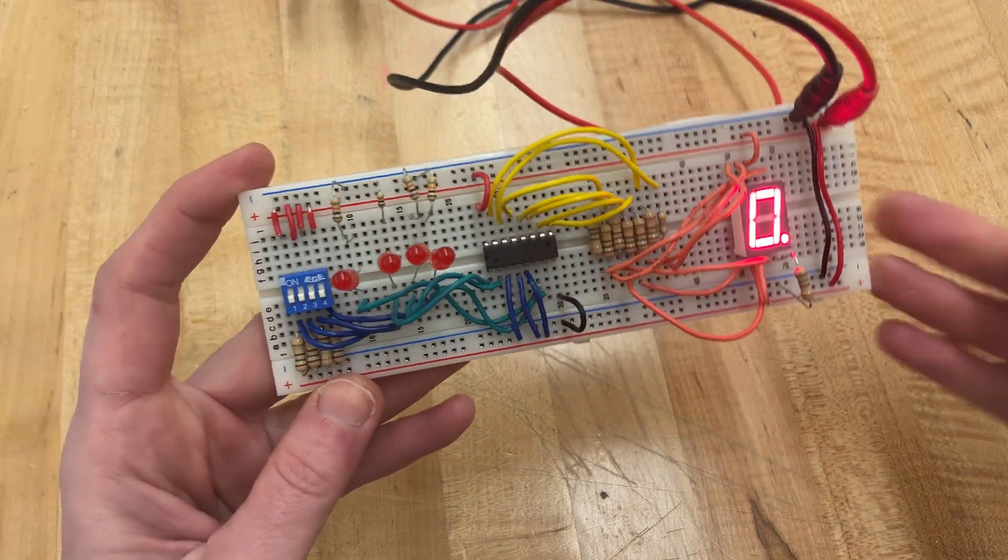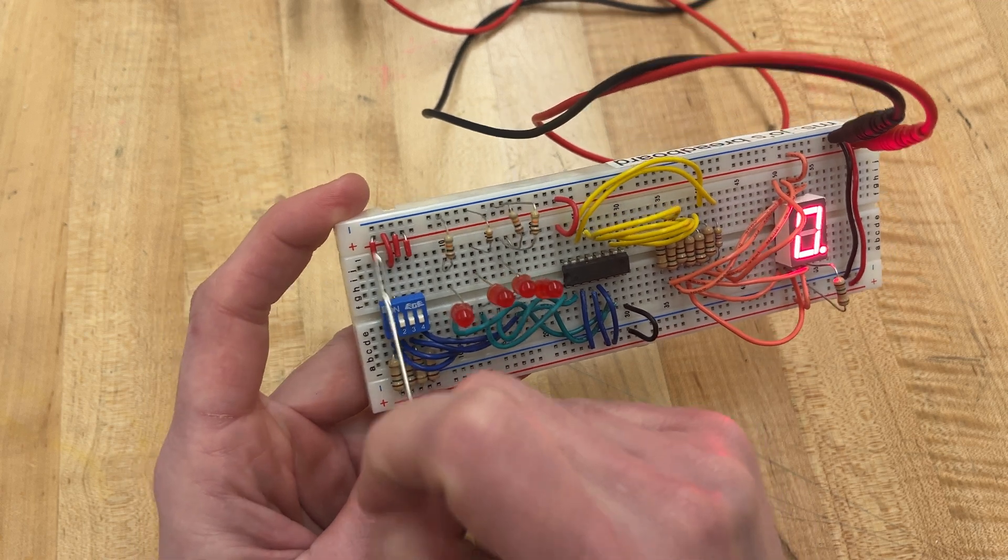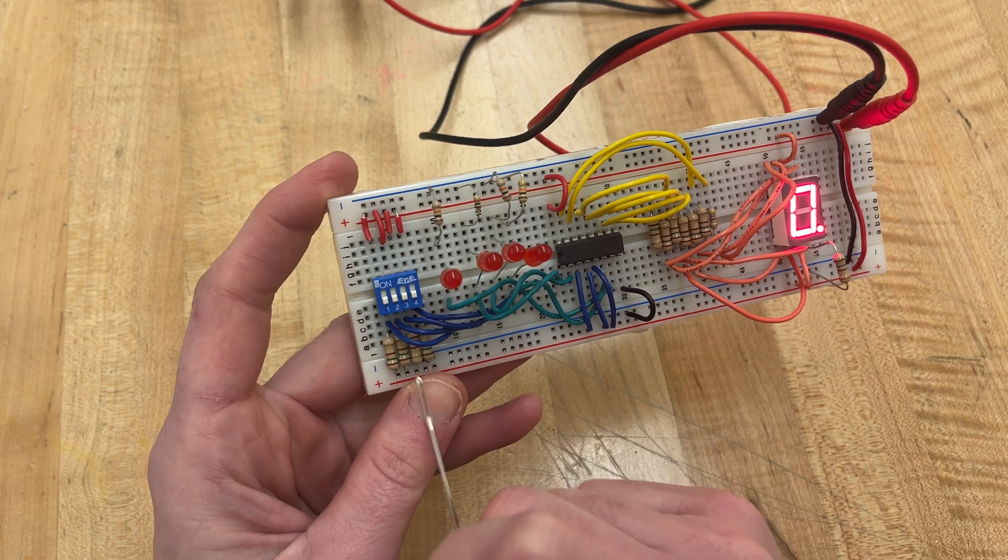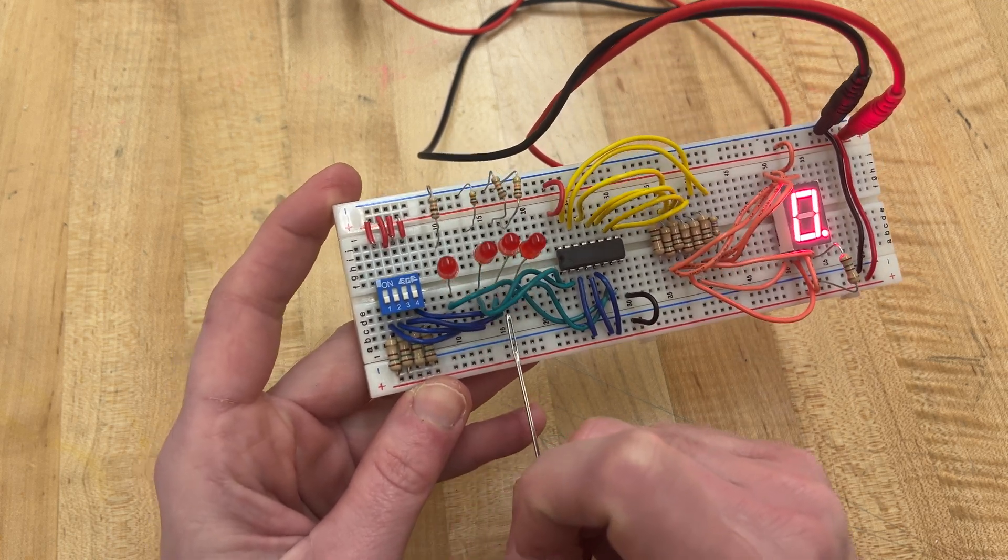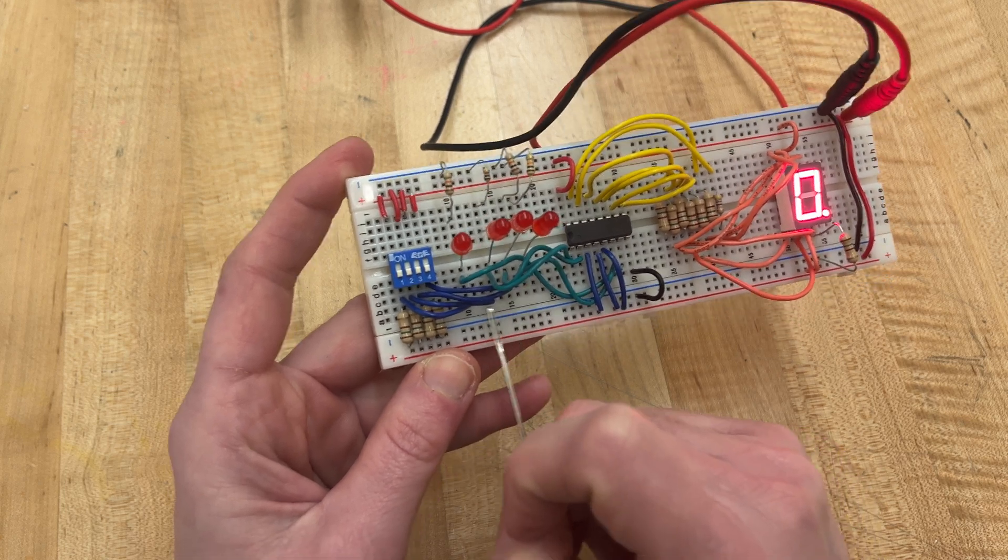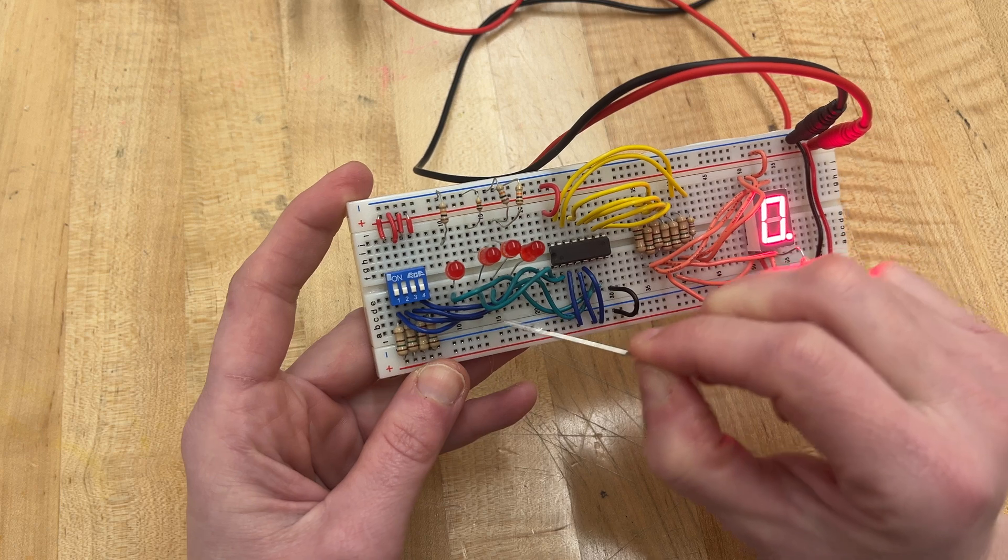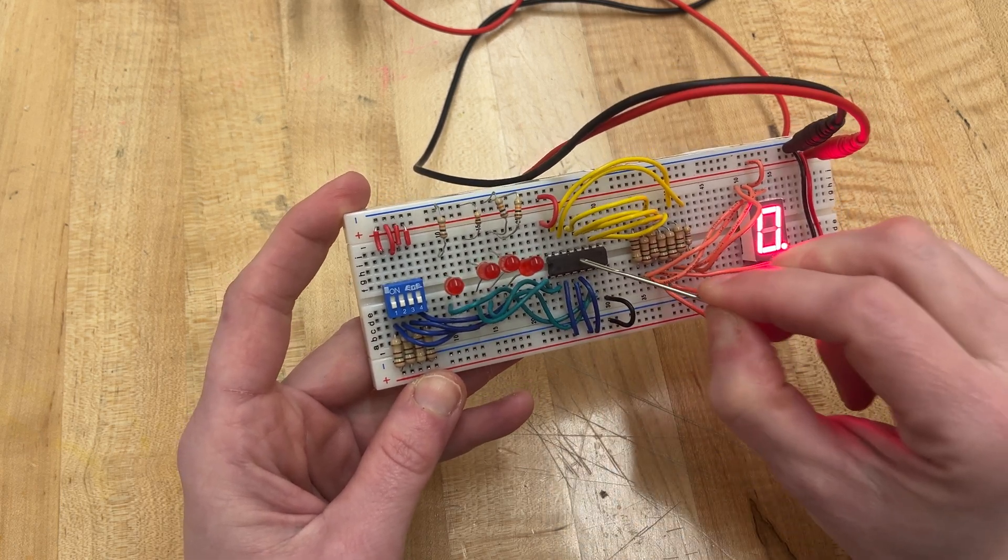So notice you have your dip switch over here all connected to the positive. And then over here you have resistors connecting to the negative, and then your four wires going out into—I just put them in four random areas so that my LEDs could also connect to them—and then on that same rows, those are going to the appropriate places on your decoder.